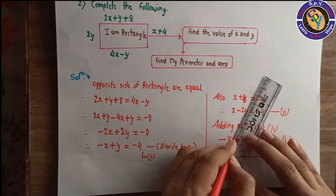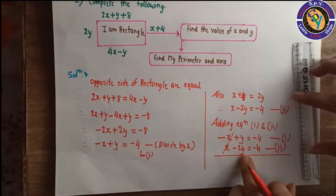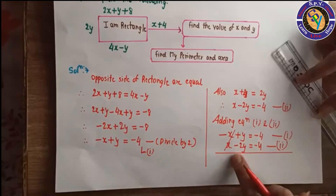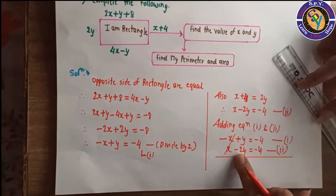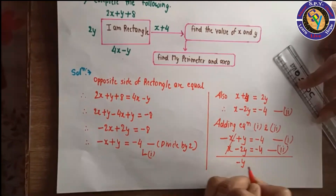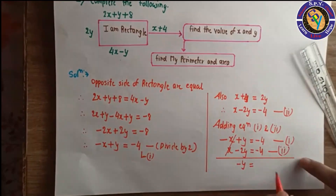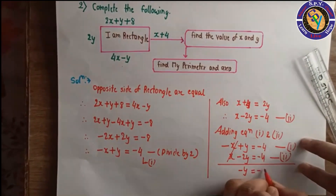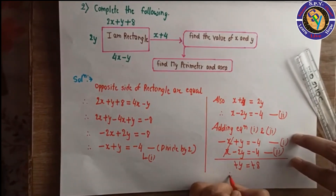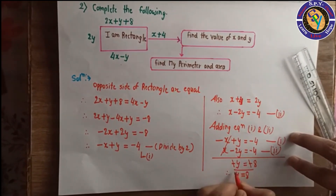Adding the equations, x terms cancel because one is minus x and the other is plus x. We get minus 2y plus y, which is minus y, equals minus 8. The negatives cancel, so y equals 8.